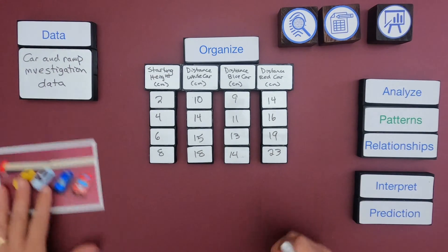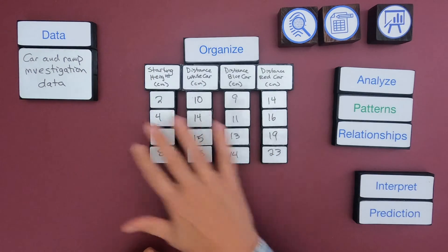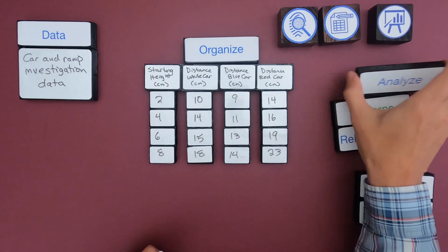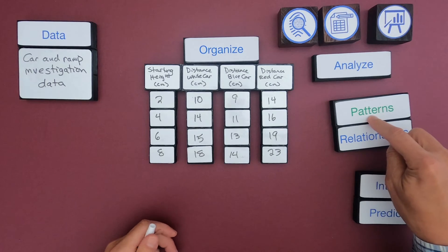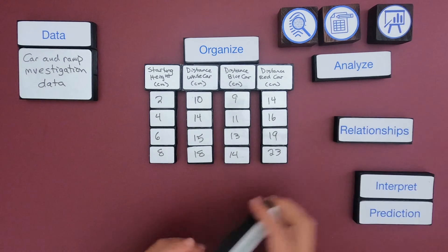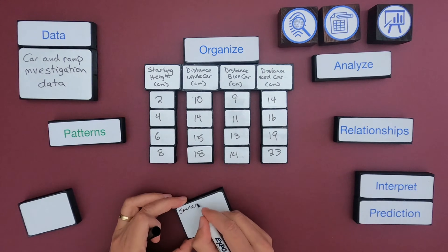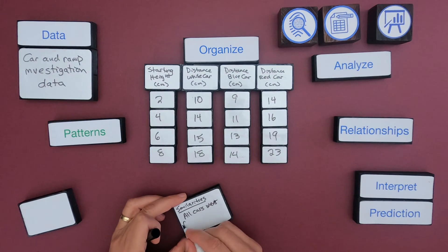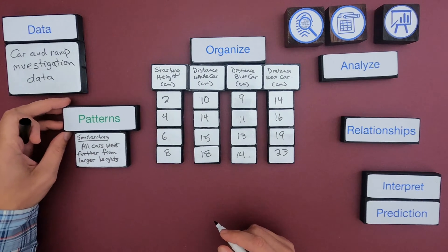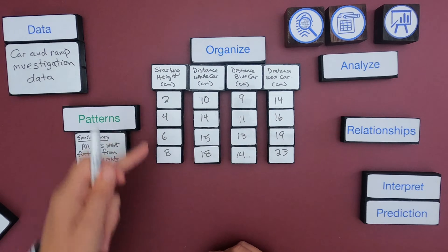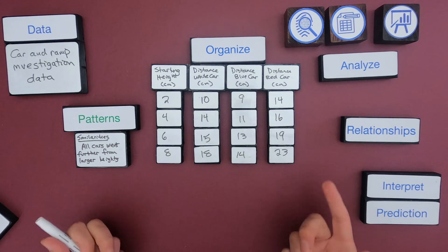Now that I've organized the data, I want to start to analyze it — this is where I start to make sense of the data. A really good way to start is to look for patterns. When looking at different groups, look for similarities and differences. The first pattern I notice is that all the cars went further from larger heights — as we increase the height, they all increase. Looking vertically, they all go up, which is a similarity between all the different cars.